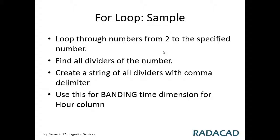This approach is useful in different scenarios — for example, creating a banding in a time dimension for the hour column. We have 24 hours, and I want to create a banding for all integer dividers of 24, which are 2, 3, 4, 6, 8, and 12. Using a for loop structure, I can create that SELECT statement dynamically and then execute it.